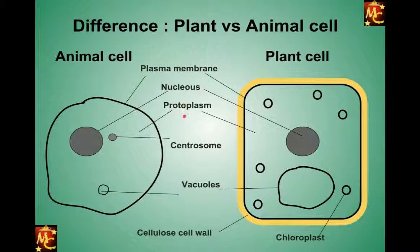Protoplasm is actually cytoplasm plus nucleoplasm together. The liquid or semi-liquid inside the nucleus is called nucleoplasm, and outside the nucleus it is called cytoplasm. Together we call it protoplasm. So both cells have protoplasm — the semi-liquid material filled in the cell.